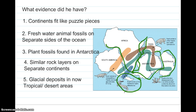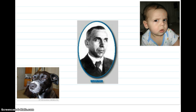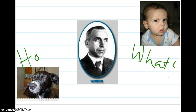They also found glacial deposits from glaciers in areas that are now tropical and desert. So although Alfred Wegener had a lot of evidence to back up his theory of continental drift, the world of science was still pretty skeptical — they were like, 'What? How?'